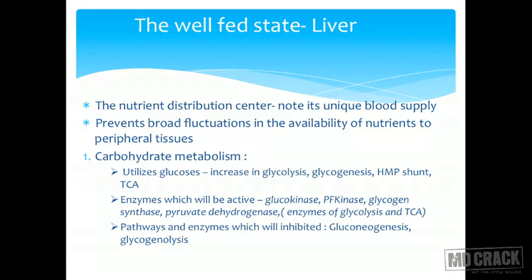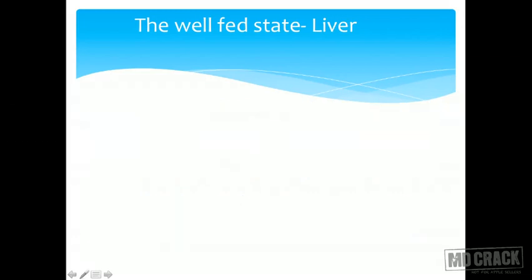In the liver during the well-fed state, under the action of insulin: glycolysis is occurring, glycogenesis is occurring, and glycogenolysis is inhibited. Active pathways include glycolysis, glycogenesis, HMP shunt, and the TCA cycle. Active enzymes include glycolytic enzymes, glycogen synthase, and pyruvate dehydrogenase. Inhibited pathways include gluconeogenesis and glycogenolysis.